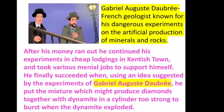After his money ran out, he continued his experiments in cheap lodgings in Kentish Town and took various menial jobs to support himself. He finally succeeded using an idea suggested by the experiments of Gabriel Auguste Daubrée, a French geologist known for his dangerous experiments on the artificial production of minerals and rocks. Following his experiments, he put a mixture that might produce diamonds together with dynamite in a cylinder too strong to burst when the dynamite exploded.